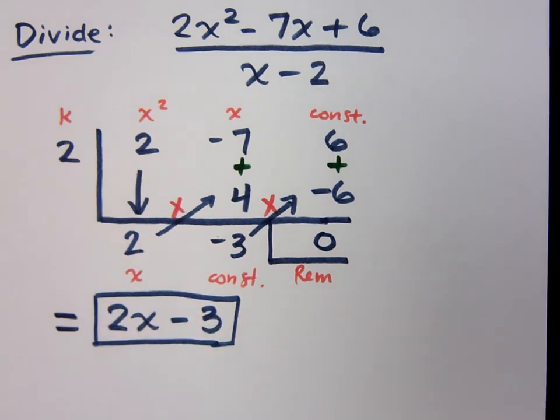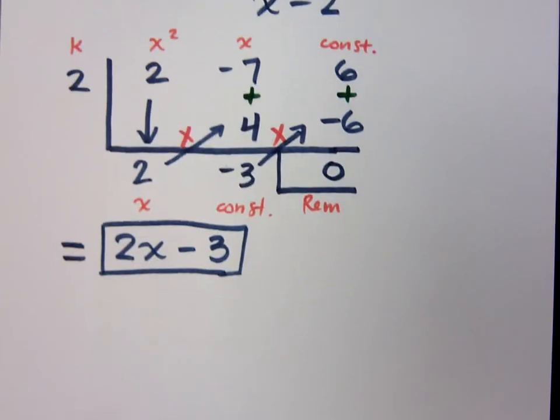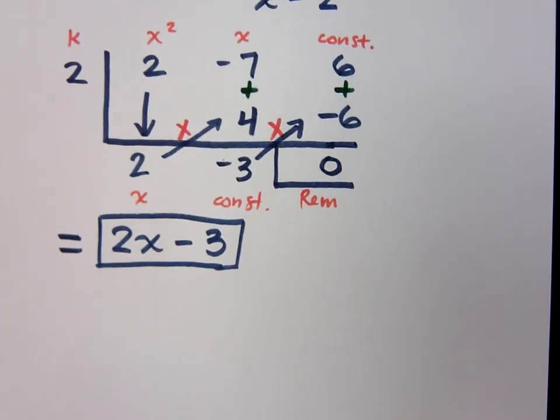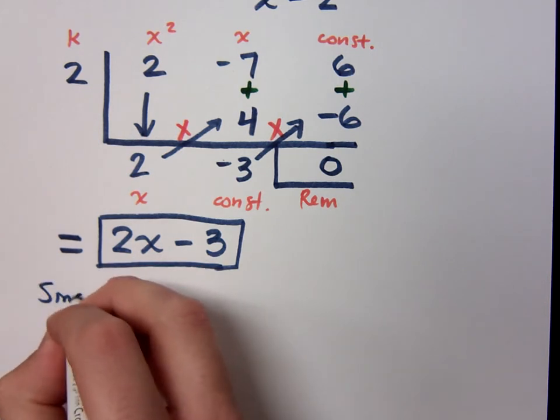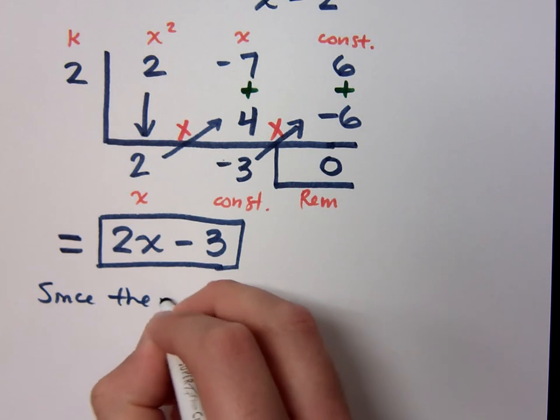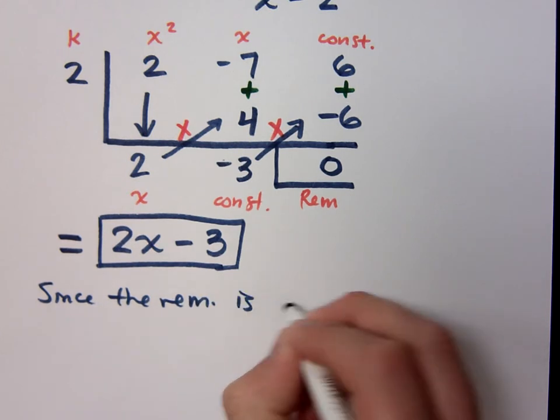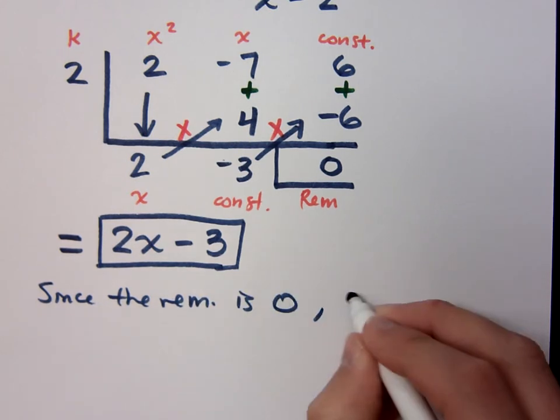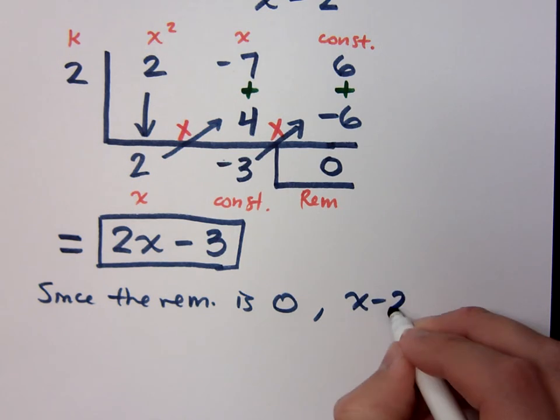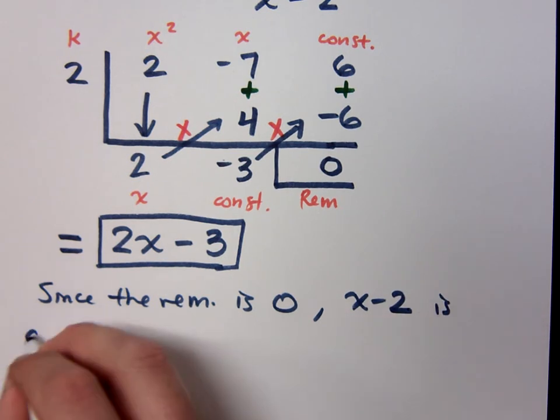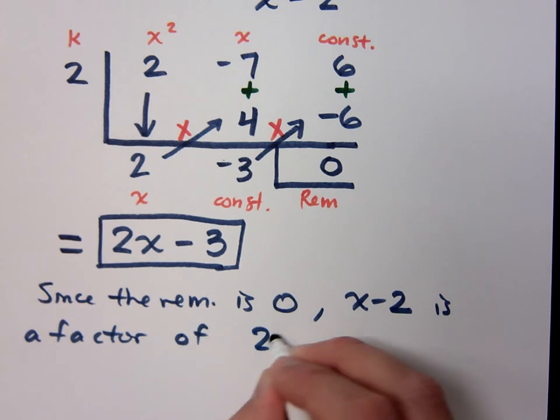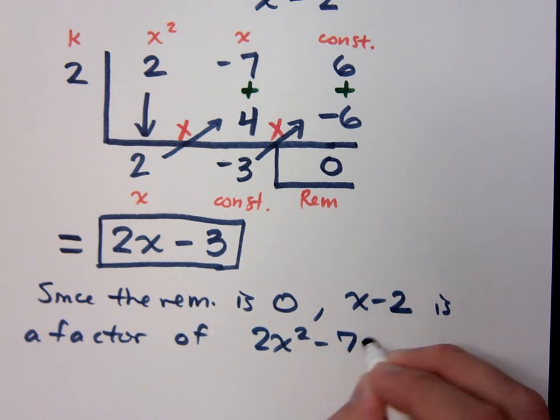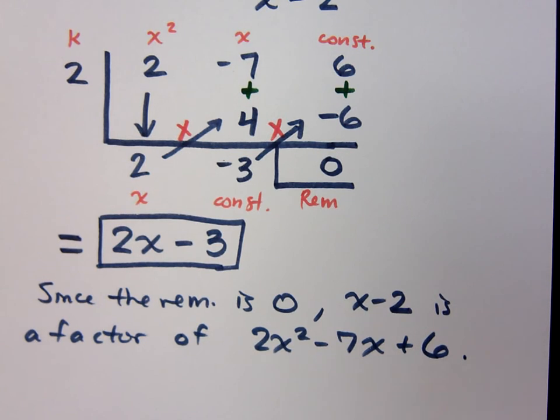Right, so let's make sure we write that, because these are going to be good notes for you to understand, because so much of this stuff is connected and woven together. So here's what we can say. Since the remainder is 0, that means that x minus 2 is a factor of the polynomial, 2x squared minus 7x plus 6. Do you all believe that?